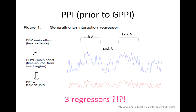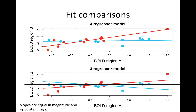Prior to GPPI that's what it looked like: three regressors when we should have four. What does that mean? In the example with BOLD in region A versus region B across two tasks, normally we want our slopes to be unrestricted for each task type. But if we use that style of PPI, it forces the slopes to be equal in magnitude and opposite in direction — centered about zero. So the fit isn't as good, and the slope for the red line is the same magnitude as for the blue line but with opposite sign, reflected about zero.